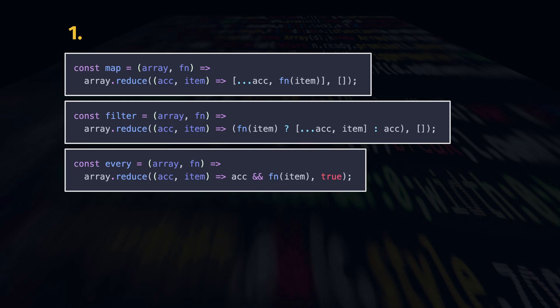Every: start with true because in an empty array any condition is always true for all its elements. Then apply the predicate function to each element and use logical AND.